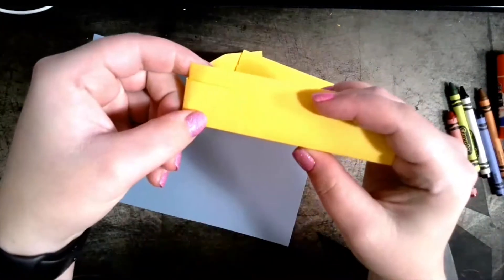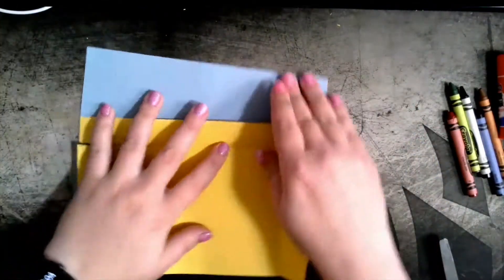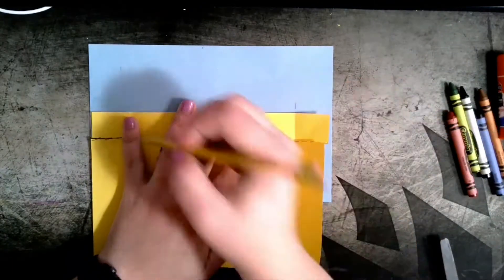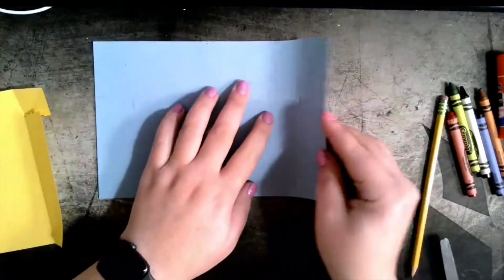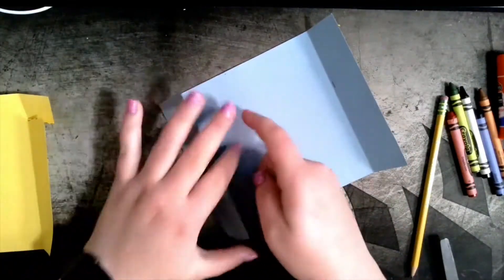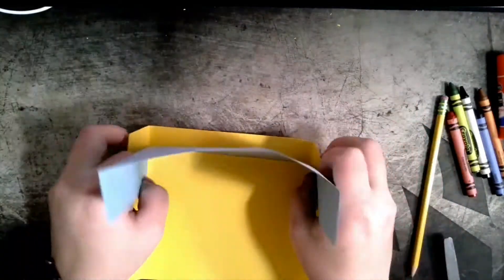And now I'm ready to make the background. The background only requires two folds and if it helps, you can use a pencil to mark out where you want to make your folds. Folding the paper in means that it can stand up, we are going to attach this to our tray using glue.